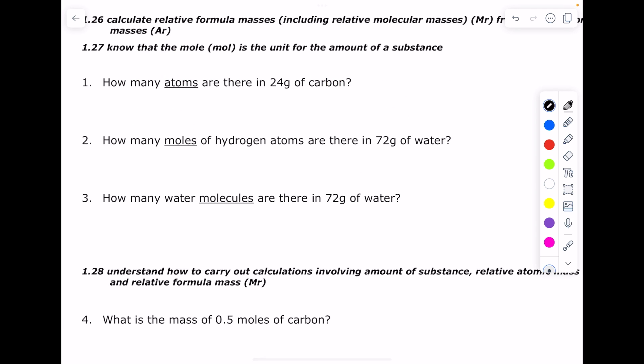Let's look at some more examples. So how many atoms are there in 24 grams of carbon? In order to answer this question we use this formula triangle to find the number of moles of carbon. So it's mass divided by MR.